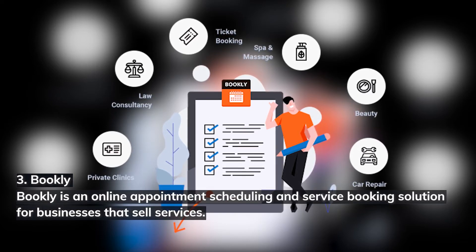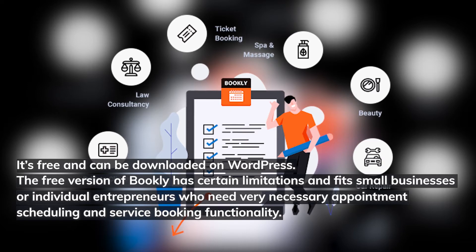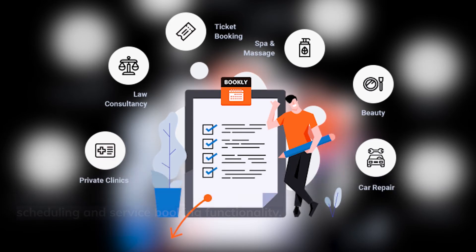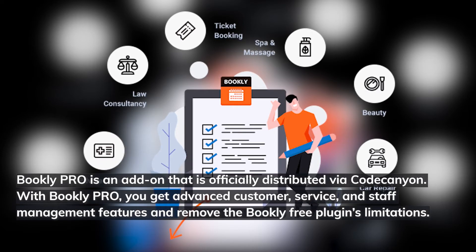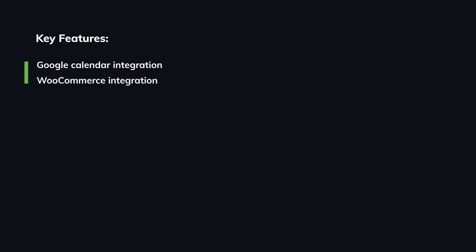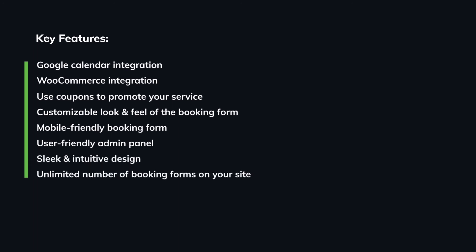Number three: Bookly. Bookly is an online appointment scheduling and service booking solution for businesses that sell services. It's free and can be downloaded on WordPress. The free version of Bookly has certain limitations and fits small businesses or individual entrepreneurs who need essential appointment scheduling and service booking functionality. Bookly Pro is an add-on officially distributed via CodeCanyon; with Bookly Pro you get advanced customer service and staff management features. Key features include: Google Calendar integration, WooCommerce integration, coupons to promote your service, customizable look and feel of the booking form, mobile-friendly booking form, and a user-friendly admin panel.